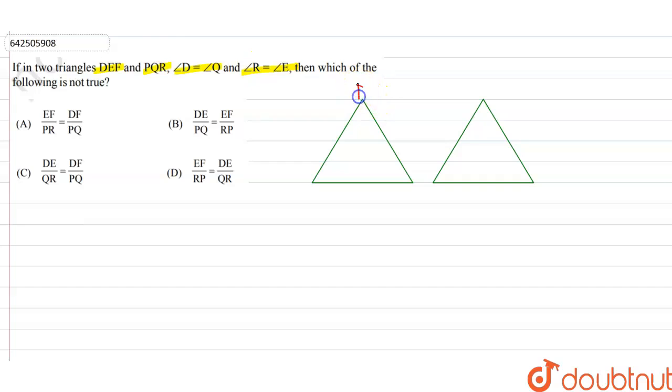So this is triangle D, angle D equals Q. Angle D is equal to angle Q, angle R is equal to angle E. Let's say angle E and angle R are equal. So this is F, and this is P.